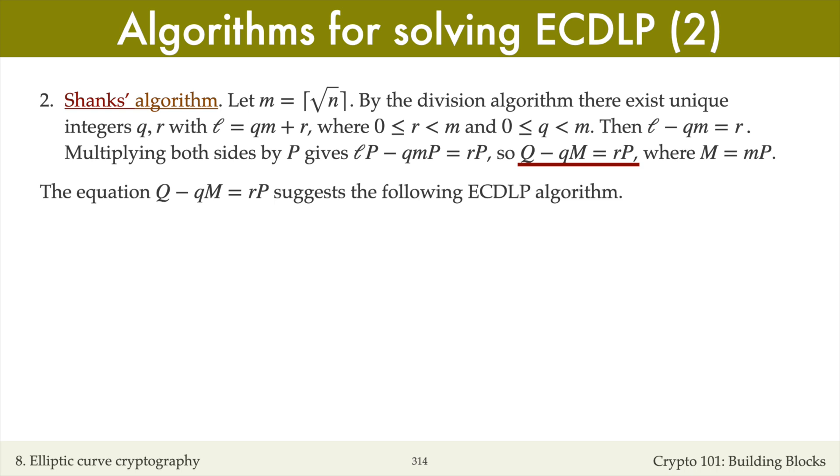Shanks' algorithm is suggested by this key equation. The idea is to compute the points on the right-hand side for all integers r between 0 and m minus 1 and store these in a table. And then we compute all the points on the left-hand side for all integers q between 0 and m minus 1 and look for a match. This should remind you of the meet in the middle attack on double DES from video lecture V2d.